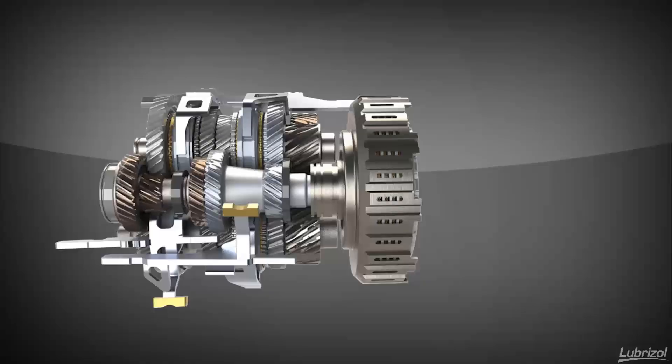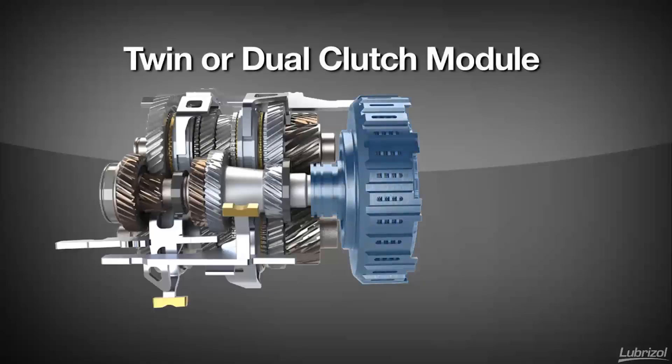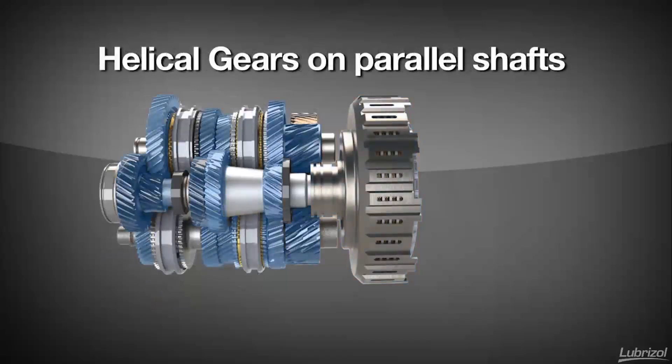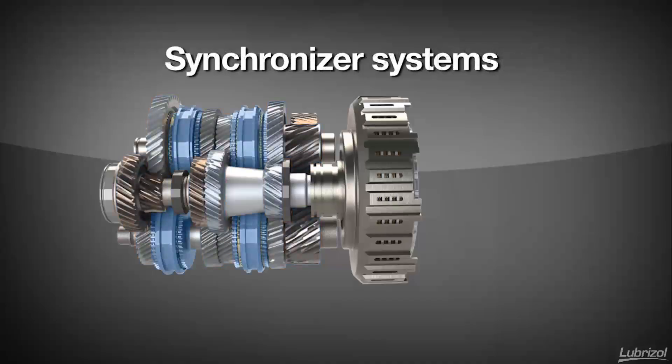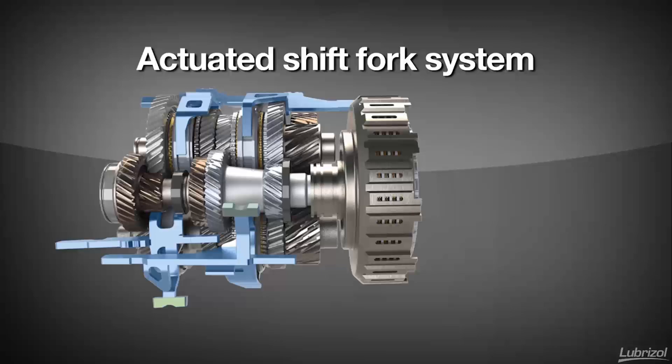Dual clutch transmissions contain the traditional elements of a manual and are driven by a twin or dual clutch module. The manual elements include helical gears on parallel shafts to create different gear ratios, synchronizer systems to ease gear engagement, and an actuated shift fork system to select the appropriate gear ratio.